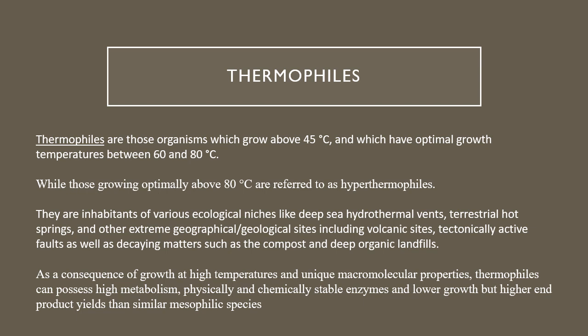Today we will focus on thermophiles. Thermophiles are organisms which grow above 45 degrees Celsius, but mainly their optimal growth temperature is between 60 to 80 degrees Celsius. Those able to grow above 80 degrees Celsius are referred to as hyperthermophiles. So you may get a viva question on the difference between a thermophile and a hyperthermophile — the key difference is in their optimal growth temperatures.